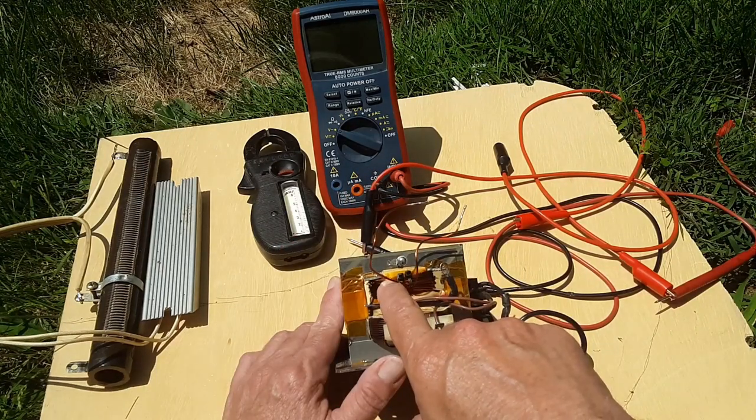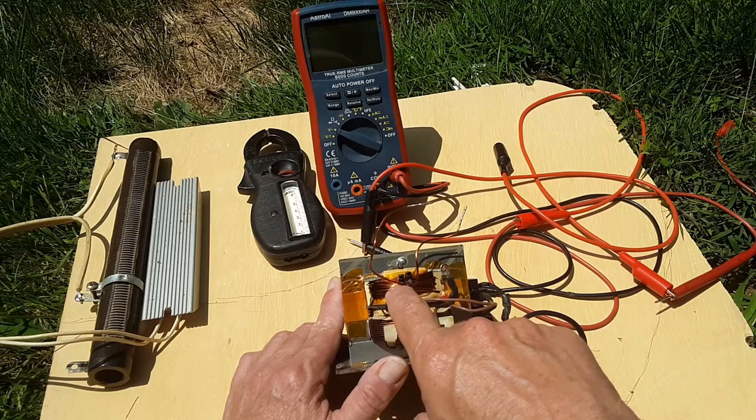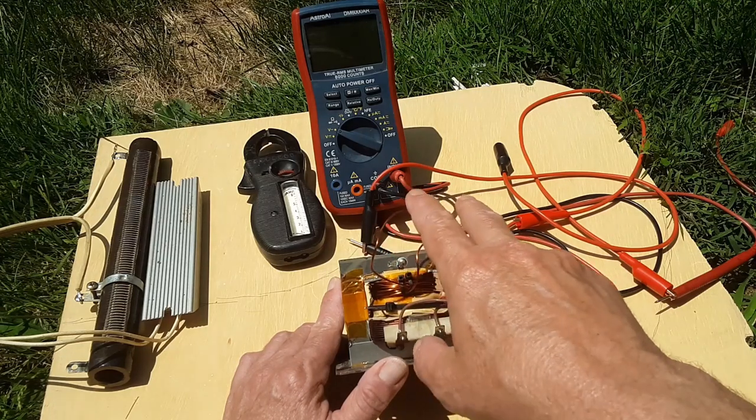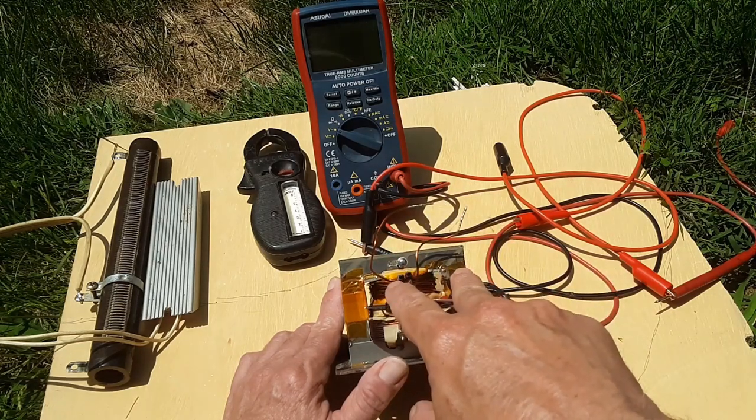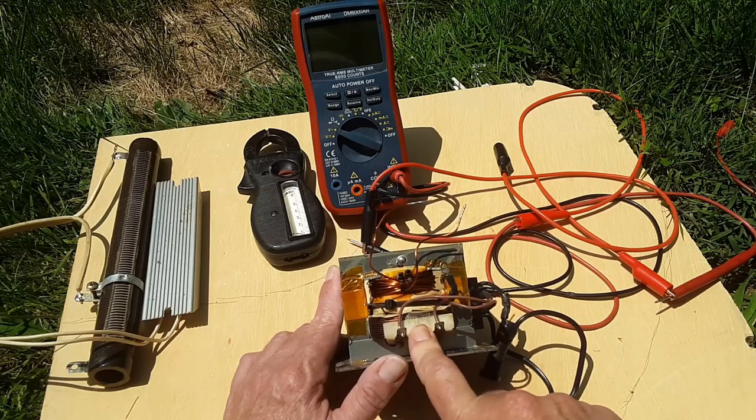So on my last video I had two separate secondary windings. They were both 18 turns and when those two windings were paralleled together the current draw on the input to this was 5 amps.